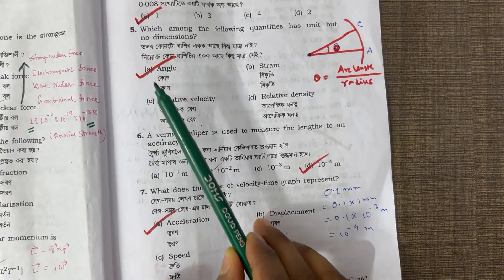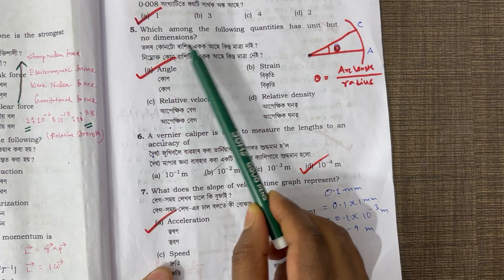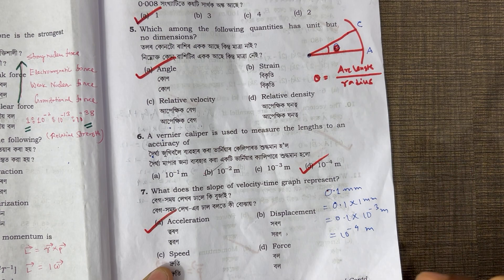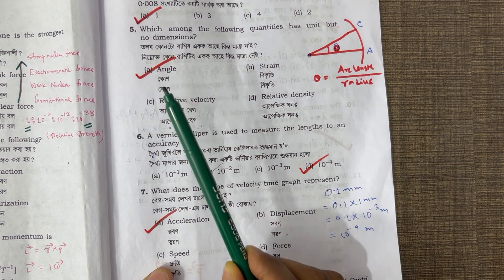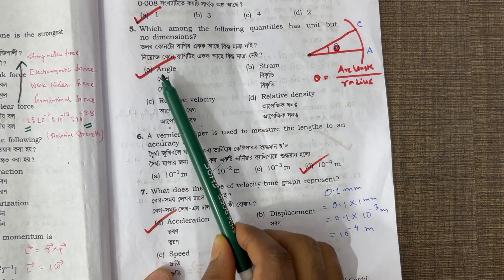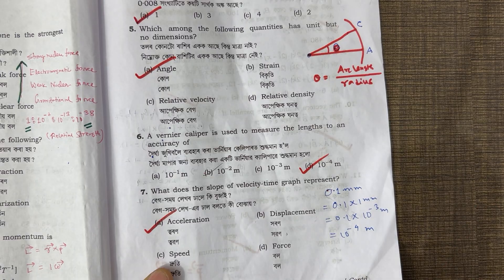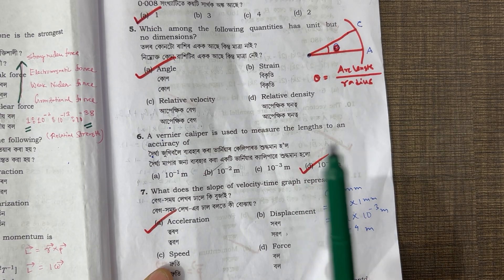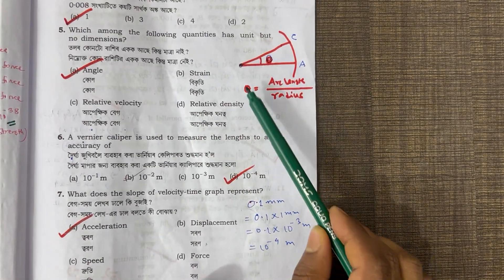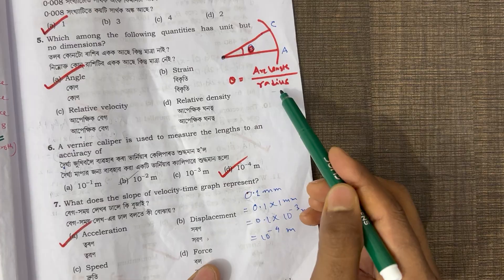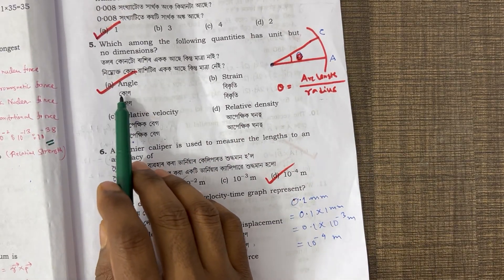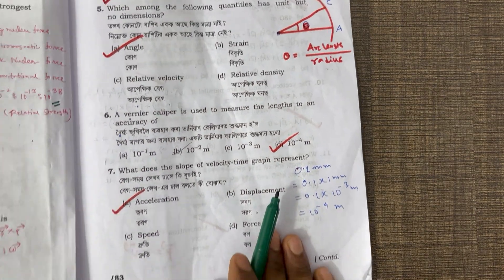Question 5: which among the following quantities has a unit but no dimensions? A supplementary physical quantity — this is the plane angle and solid angle. The angle is defined as arc length divided by radius, which is a dimensionless ratio. It has a unit (degrees or radians) but no dimensions. So the answer is plane angle.